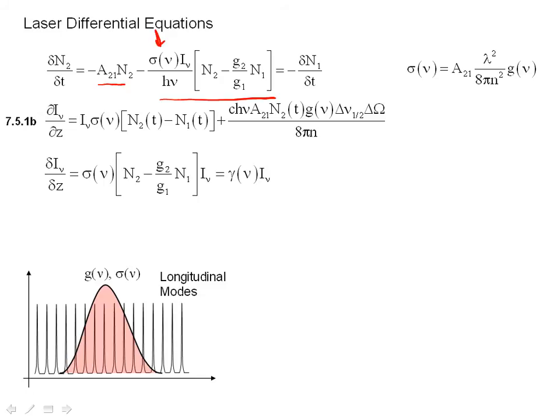For absorption and stimulated emission, it depends on the cross-section, which is given by this expression right here, as well as the intensity of light that's available and the population difference between the states.